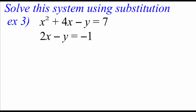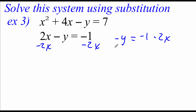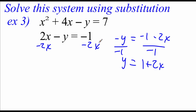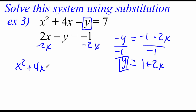Here's another substitution problem: x squared plus 4x minus y equals 7, and 2x minus y equals negative 1. I'm going to work with the second equation — subtracting the 2x over gives negative y equals negative 1 minus 2x. Dividing everything by negative 1 gives y equals 1 plus 2x. Now that y is isolated, we're going to replace the y in the top equation, giving us x squared plus 4x minus (1 plus 2x) equals 7.